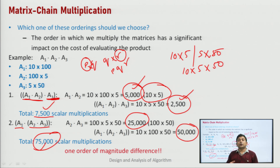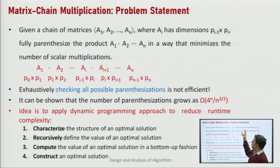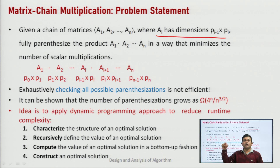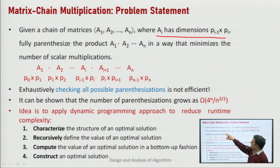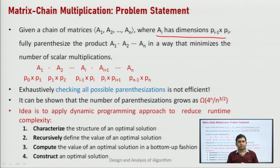This means the order of multiplication, the order of parenthesization of the matrices, has a significant impact on the cost of computation. The problem statement is: given a chain of matrices A1, A2, A3, ..., An, we need to fully parenthesize the product in such a way that minimizes the total number of scalar multiplications.